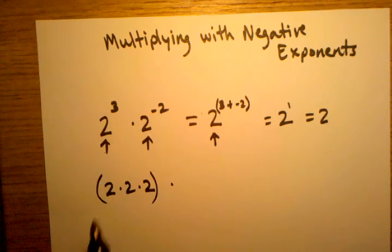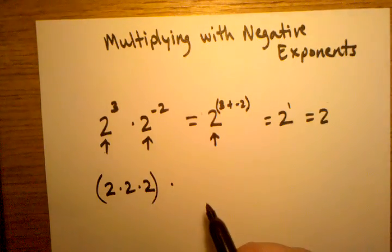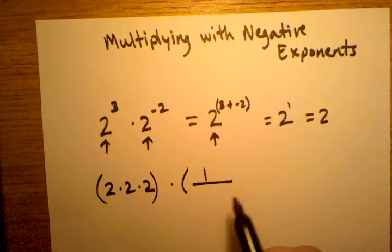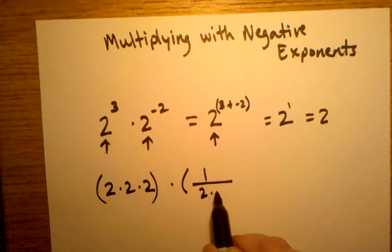and then times 2 to the negative second power, which is equal to 1 over 2 times 2.